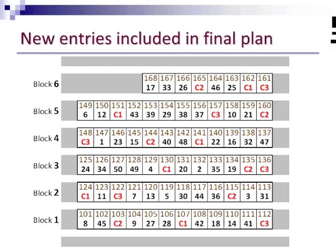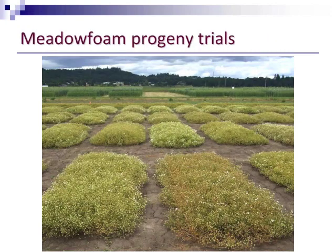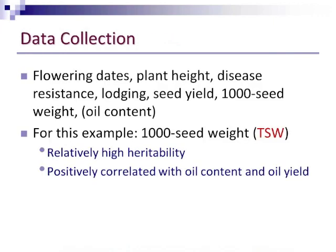You would randomly assign your remaining entries to the remaining plots. This is a picture showing what a typical metaphone progeny trial looks like, just shortly after flowering. For data collection, we collected information on flowering dates, plant height, disease resistance, lodging, seed yield, and 1,000-seed weight. We weren't able at that time to do large-scale screening of oil content, but we do have that capability now and it's a routine measurement — and of course it's our primary interest.